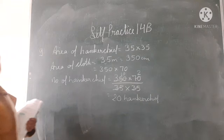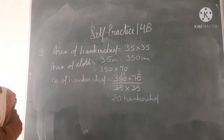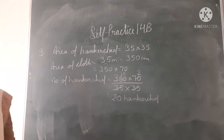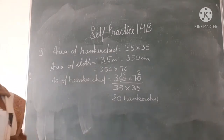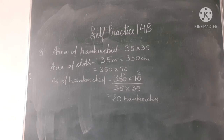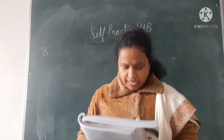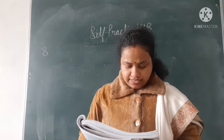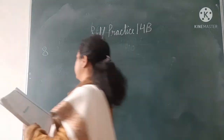From a piece of cloth, you will get total 20 handkerchiefs. Now let's start question number 8 in detail. How many tiles each 25 centimetre by 20 centimetre? So what will be the area of tiles?